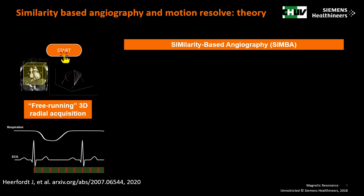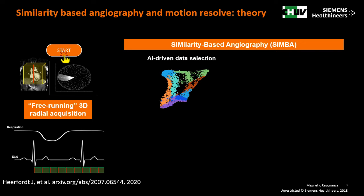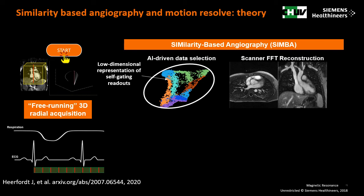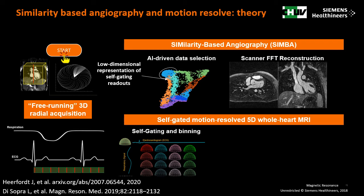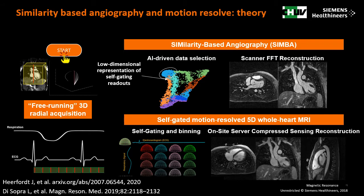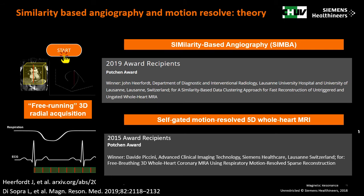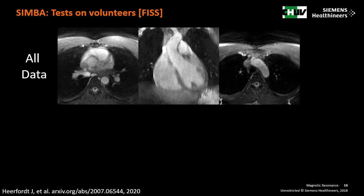We have developed two kinds of reconstruction. One is purely static and can work at the scanner, called similarity-based angiography, or SIMBA. This is basically a mapping of all the gating readouts into an n-dimensional space, where the readouts cluster into different bins. If we reconstruct all the data the image is blurred and motion-degraded, whereas if we select one cluster — like the most populated — the image becomes sharp because all the data in that cluster are self-consistent motion-wise. With the same raw data offline we can perform a binning reconstruction, using the self-gated signal to divide data into different cardiac and respiratory bins, then use the similarity among bins to reconstruct a dynamic image with motion for cardiac and respiratory physiology. Incidentally, both techniques were awarded the Prochain Award at ISMRM — SIMBA in 2019 and the ND reconstruction in 2015.